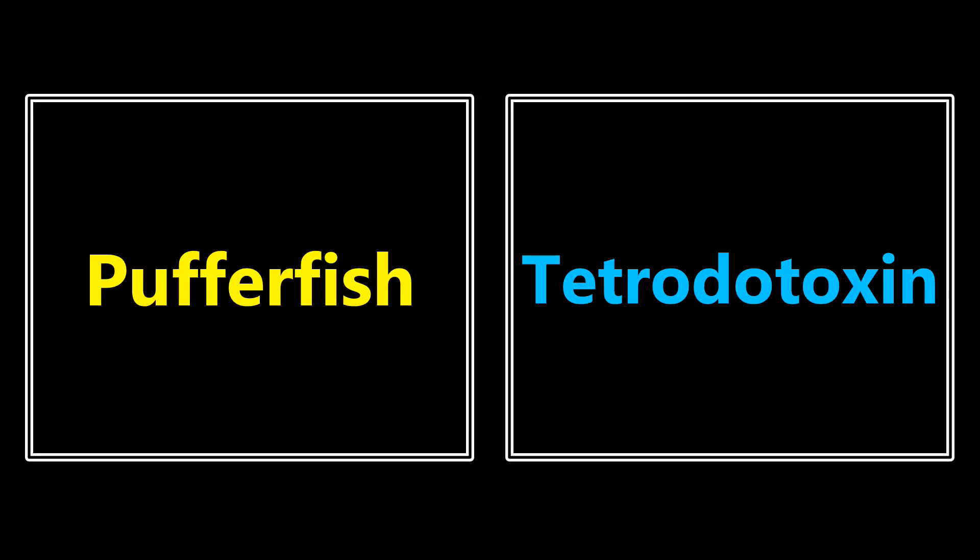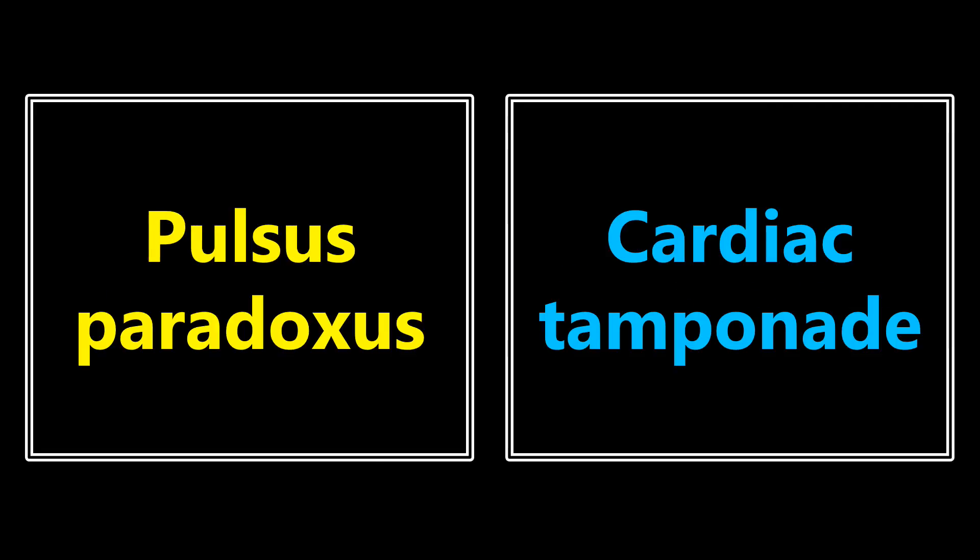Pufferfish: really the only time I've seen this in a question, they're talking about tetrodotoxin — a neurotoxin. You don't need to know too much about the mechanism, but if you see pufferfish in a question — someone was scuba diving and got stung — think tetrodotoxin. Pulsus paradoxus: if you see this, it's going to be in reference to cardiac tamponade.